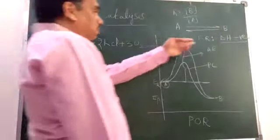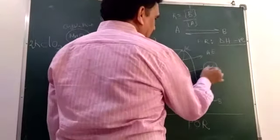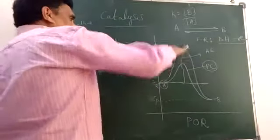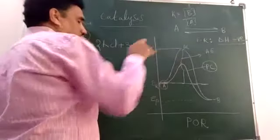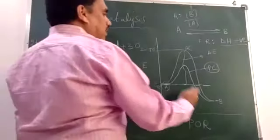When we use a catalyst, the second curve, this is presence of catalyst. What happens? The activation energy has come down. The additional energy requirement has come down. Hence, the speed of reaction increases.